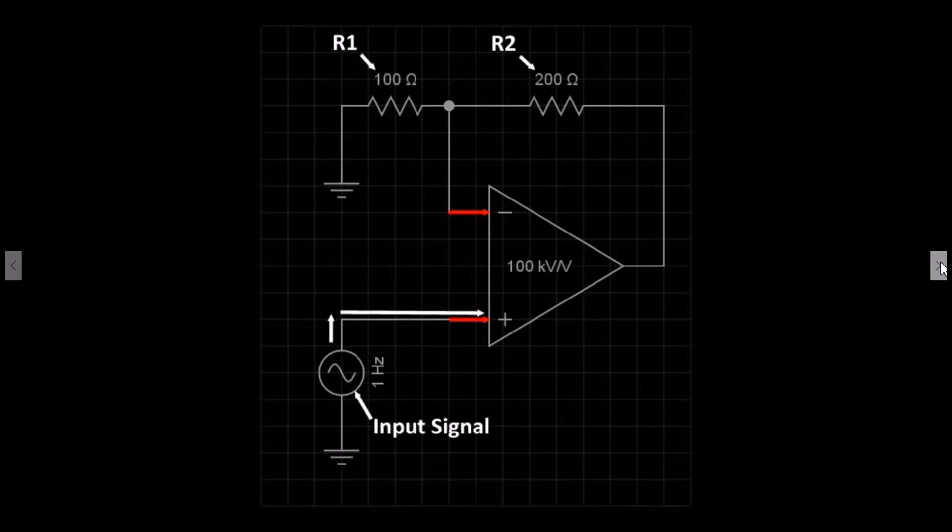Resistor 2 is used to create the negative feedback loop. Let's now examine the formula used to calculate output voltage and gain.